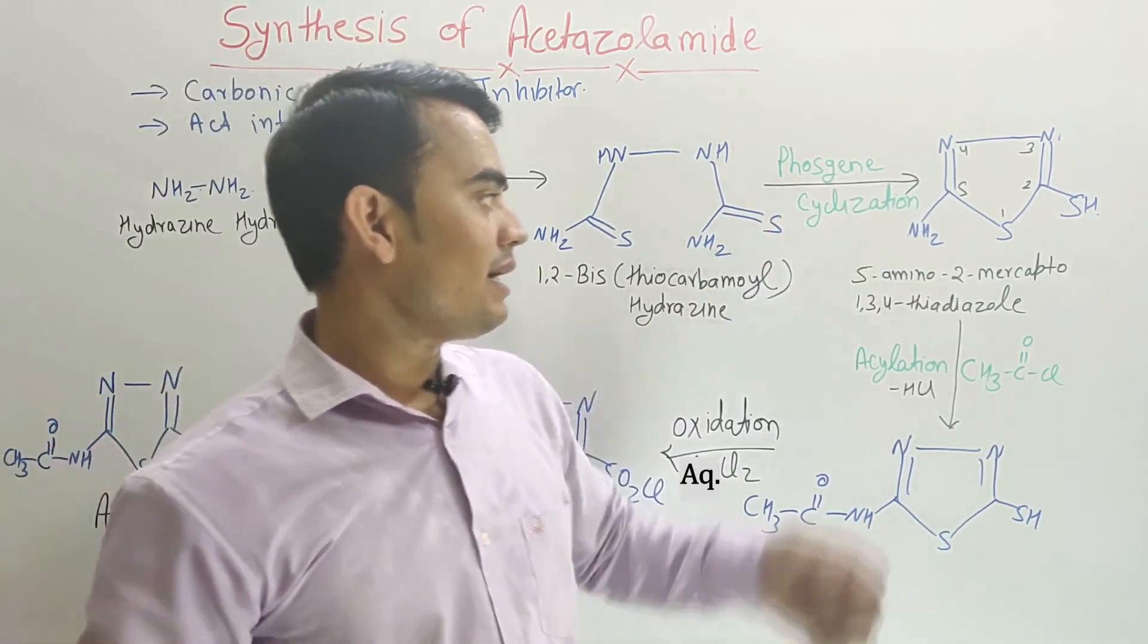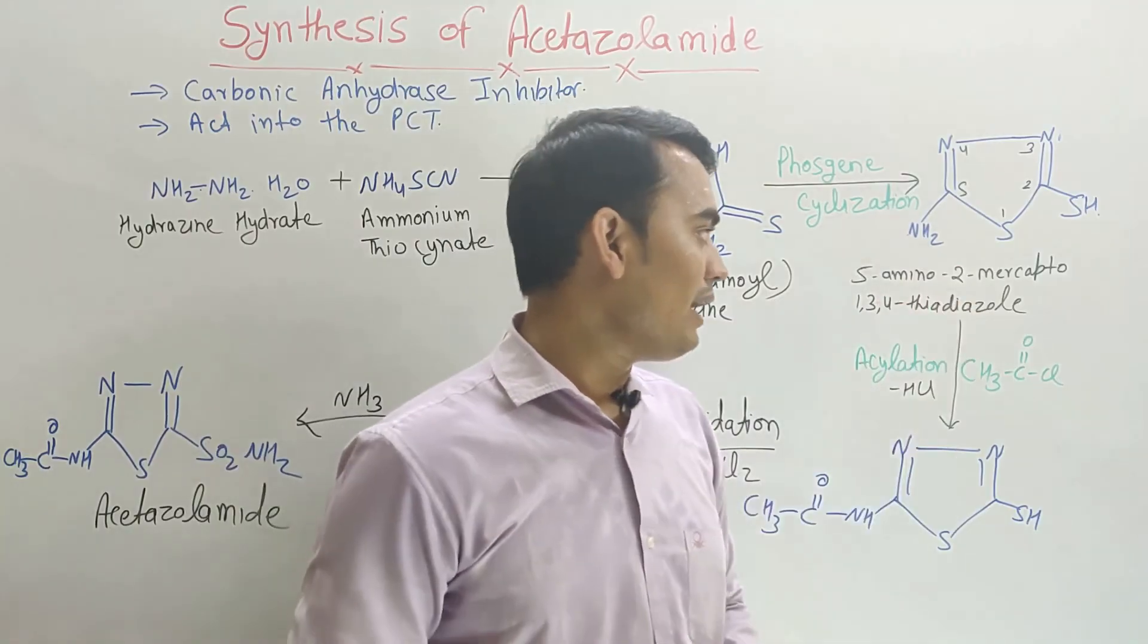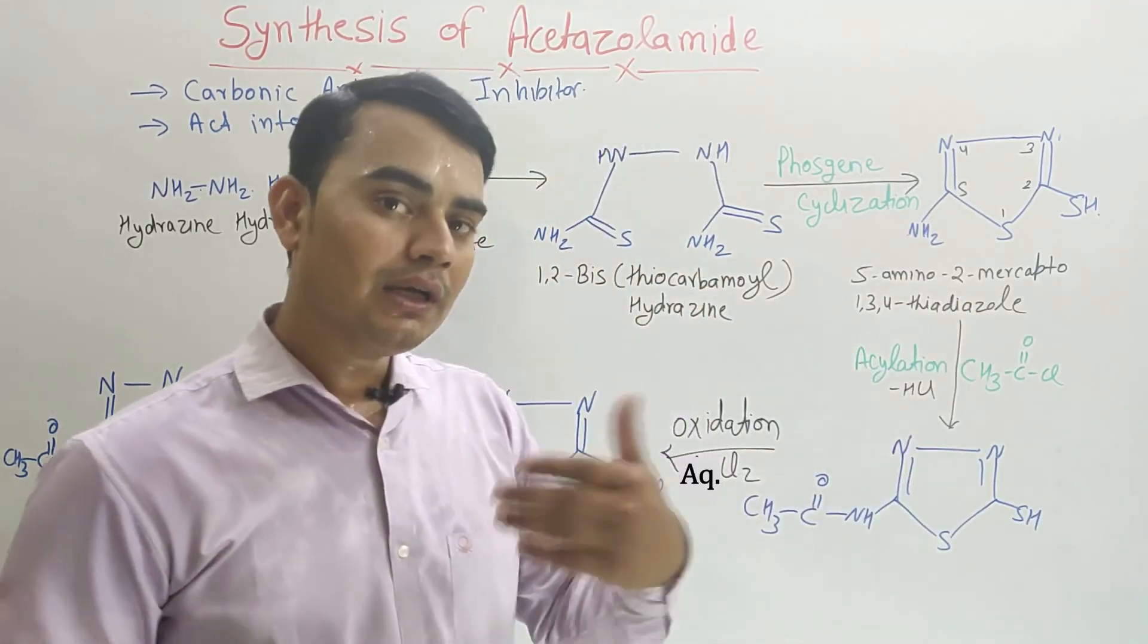When phosgene gas is passed, then cyclization occurs, and by the cyclization it forms 5-amino-2-mercapto-1,3,4-thiadiazole.